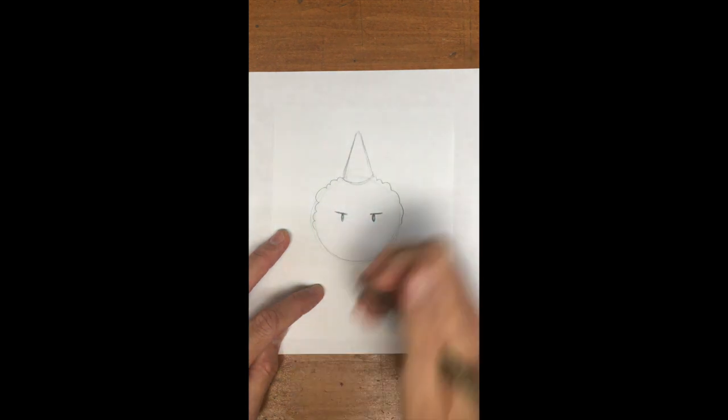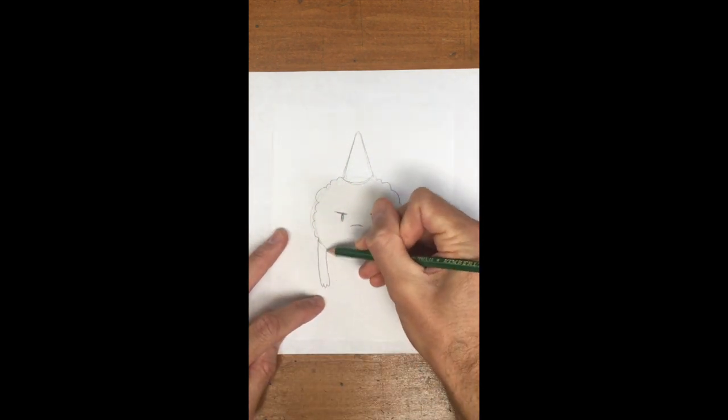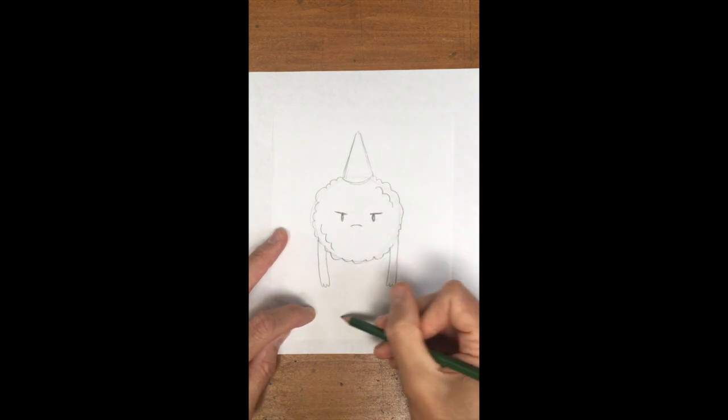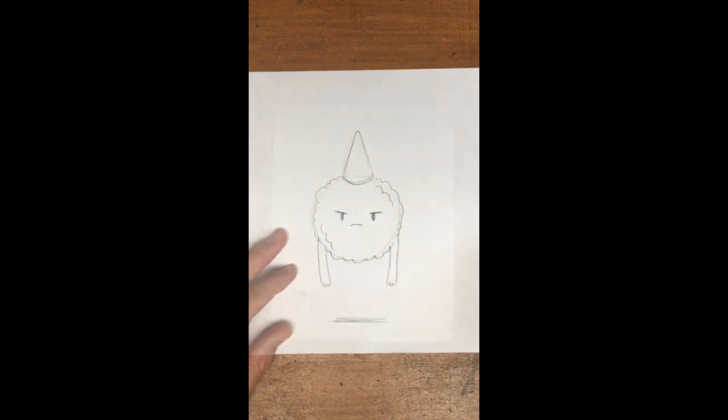I'll add his arms, which usually just hang at his sides, then finish off the meatball texture underneath and add some other textures within. Then, of course, the cast shadow, and he's ready for inking.